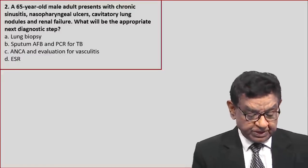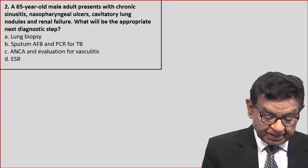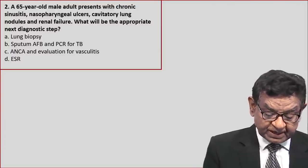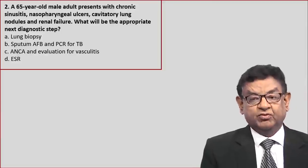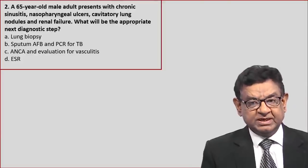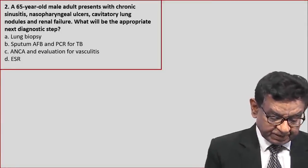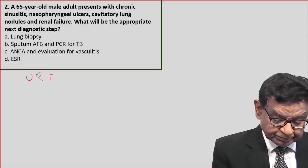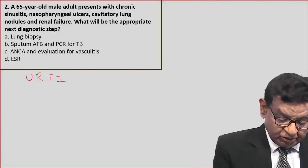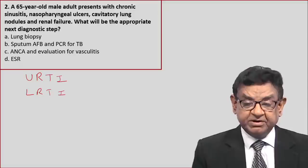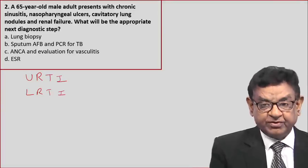Question number 2: a 65-year-old male presented with chronic sinusitis, nasopharyngeal ulcer, cavity in the lungs, and renal failure. What is the most appropriate next step? This patient is suffering from upper respiratory tract infection suggested by sinusitis, lower respiratory tract infection suggested by cavitative lesion in the lungs, and he also has renal failure — so kidney involvement is present.